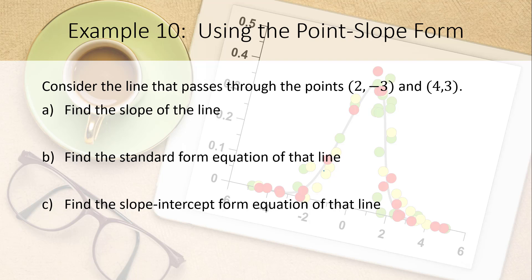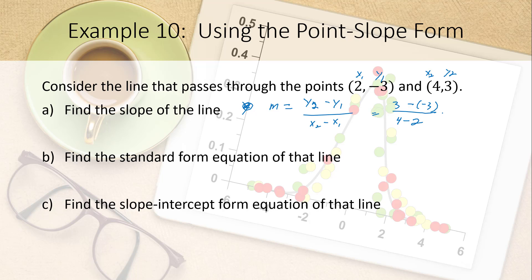Consider the line through two points. First, find the slope using m equals y2 minus y1 over x2 minus x1. With points (2, negative 3) and (4, 3): m equals 3 minus negative 3 over 4 minus 2, which is 6 over 2, equals 3.